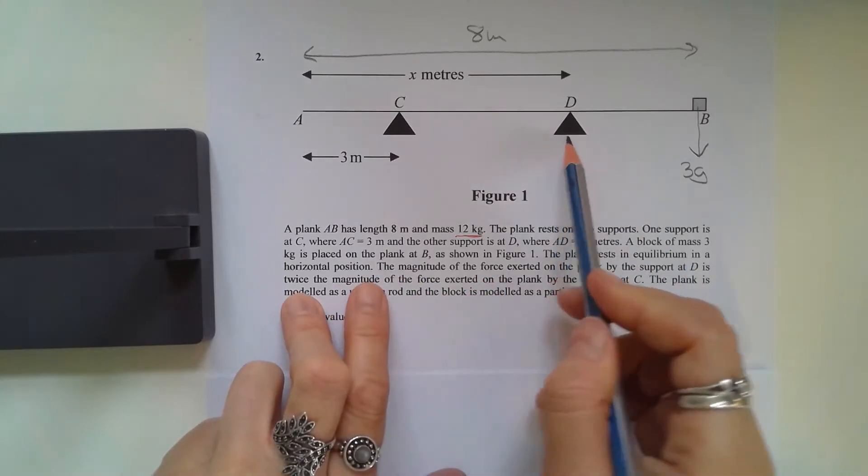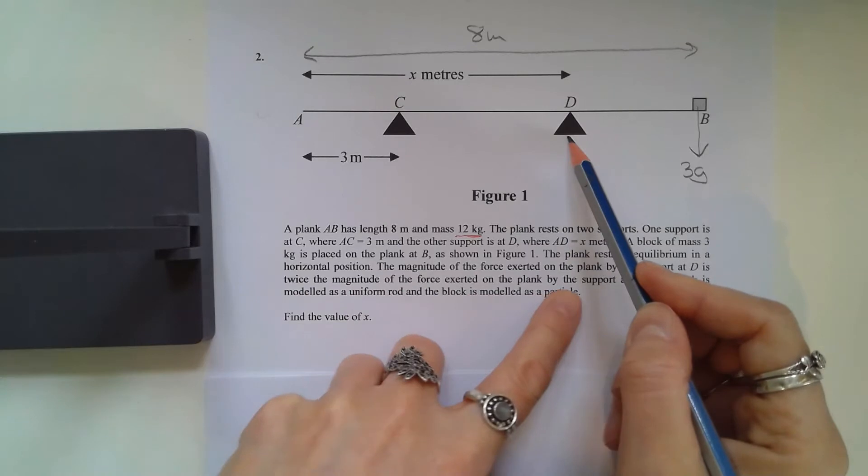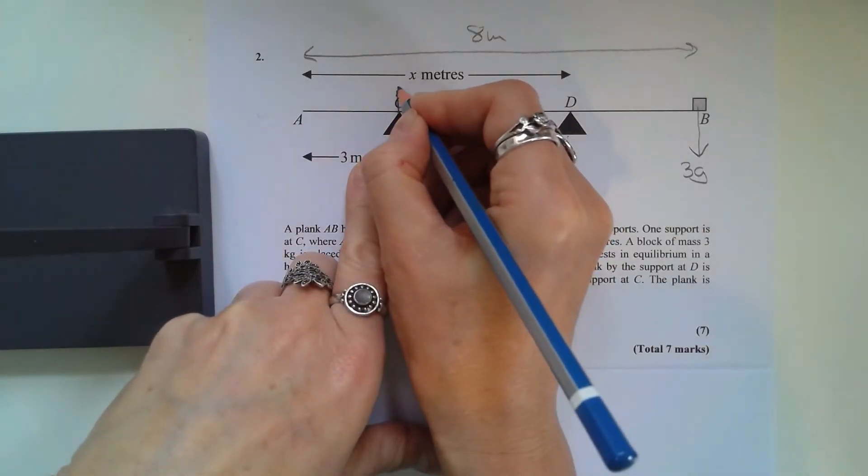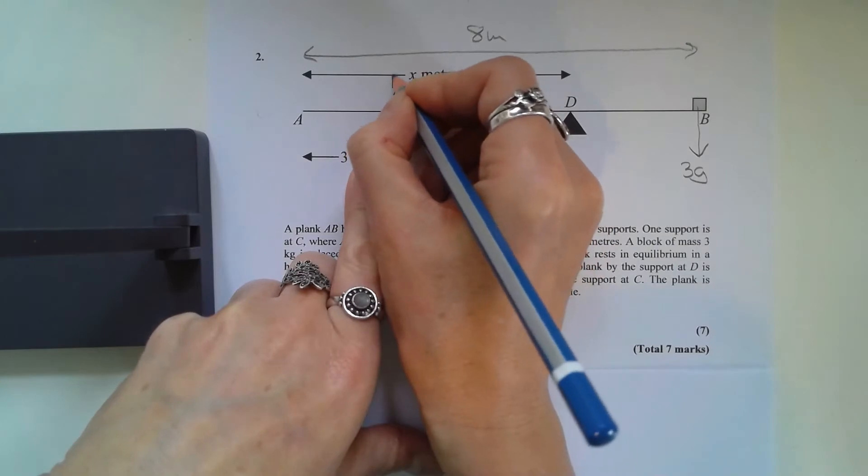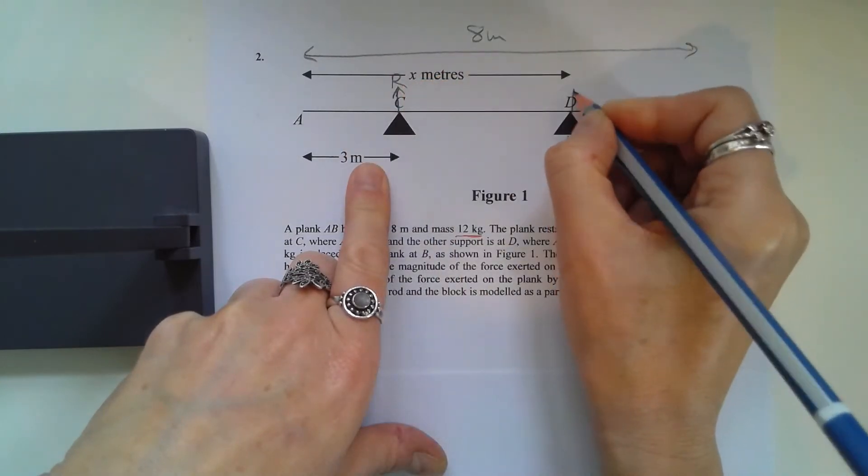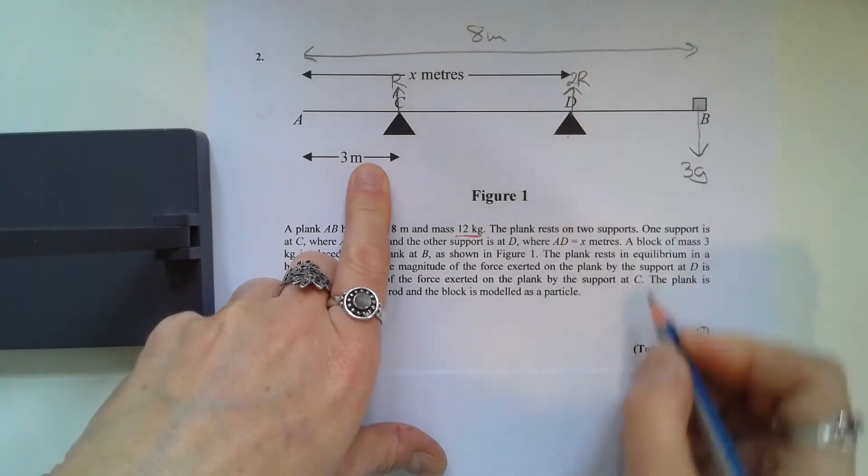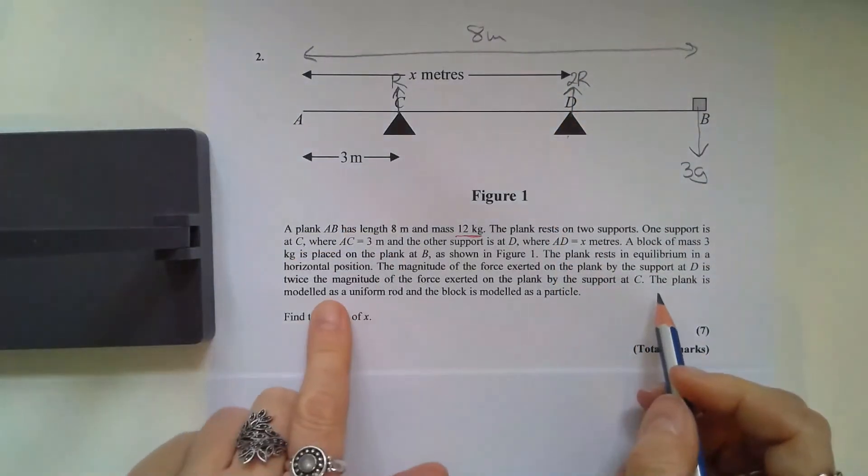The magnitude of the force exerted on the plank by the support at D is twice the magnitude of the force exerted by this plank on the support at C. So if I mark this reaction force as R, then I can mark this one in terms of R as well, so 2R.